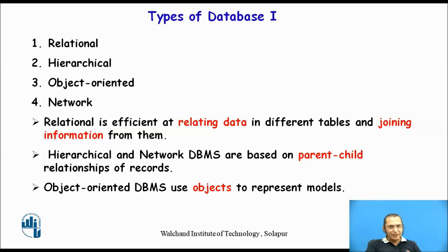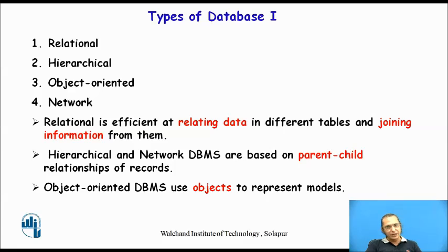The first one is called the relational database, which is efficient at relating or connecting data in different tables and joining information from different tables or files. The second type is the hierarchical database or the network database, where there is a relationship between parent and child records — one is hierarchical database and the other is network database. There is also the object-oriented database, which uses objects to represent the models of the database. So in short, there are four types: relational, hierarchical, network, and object-oriented database.